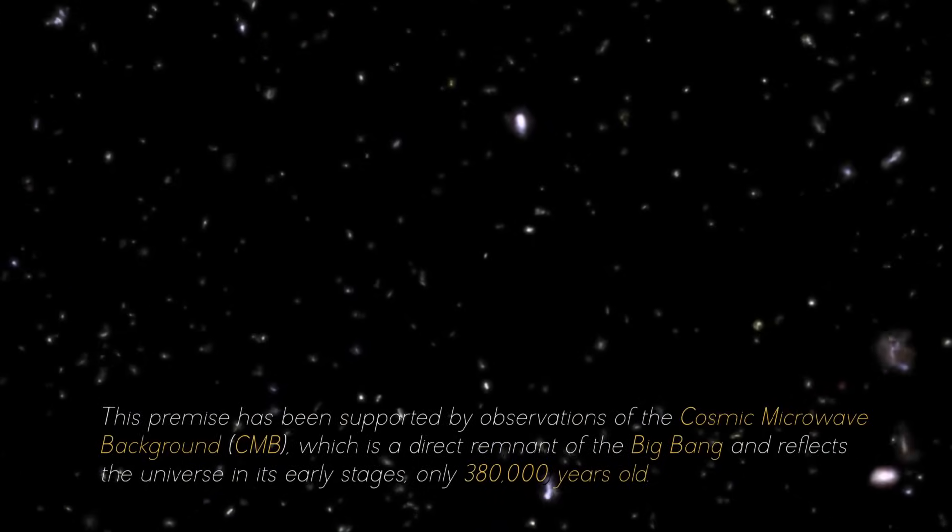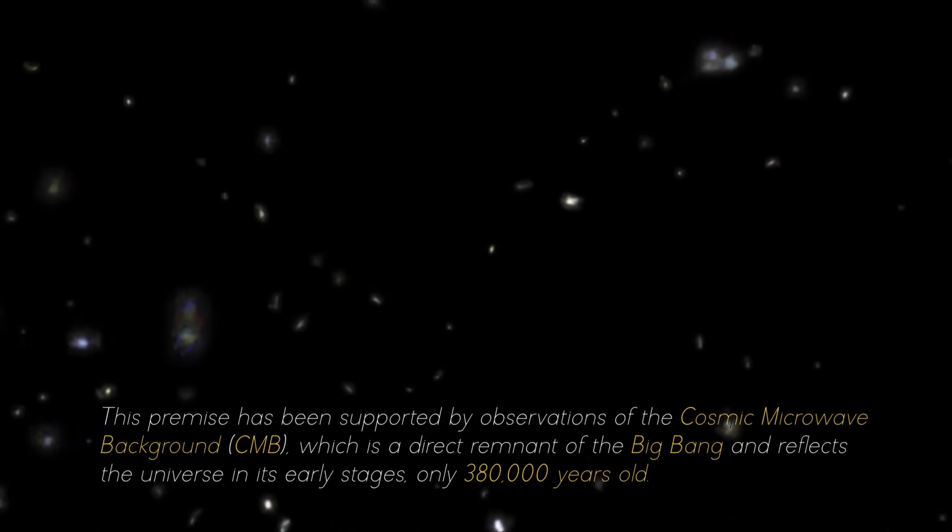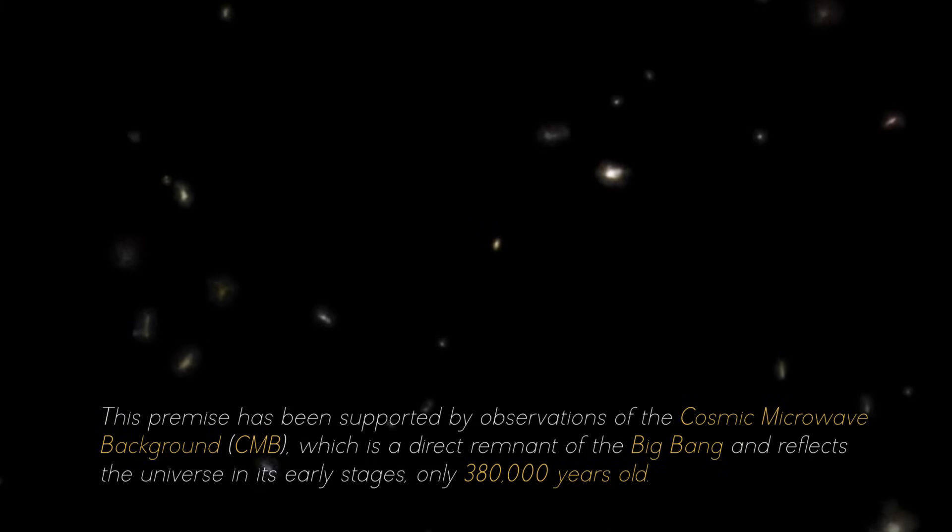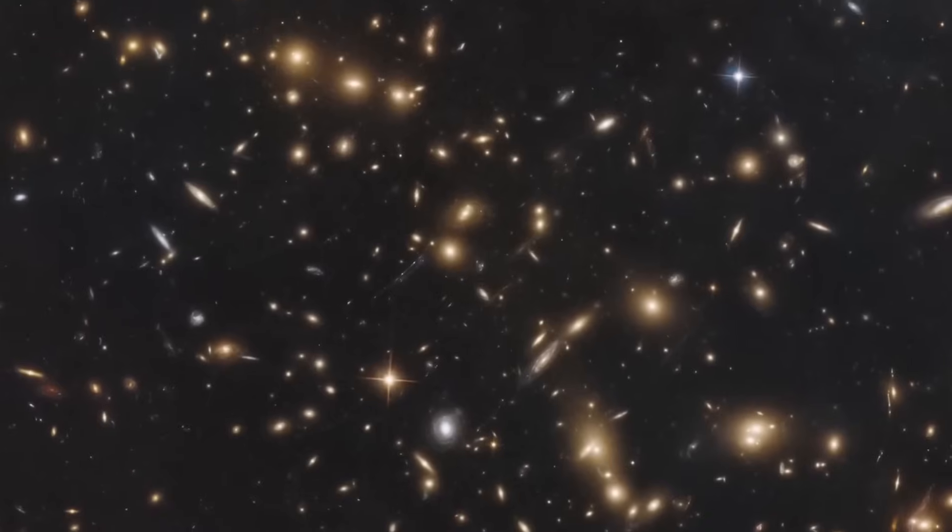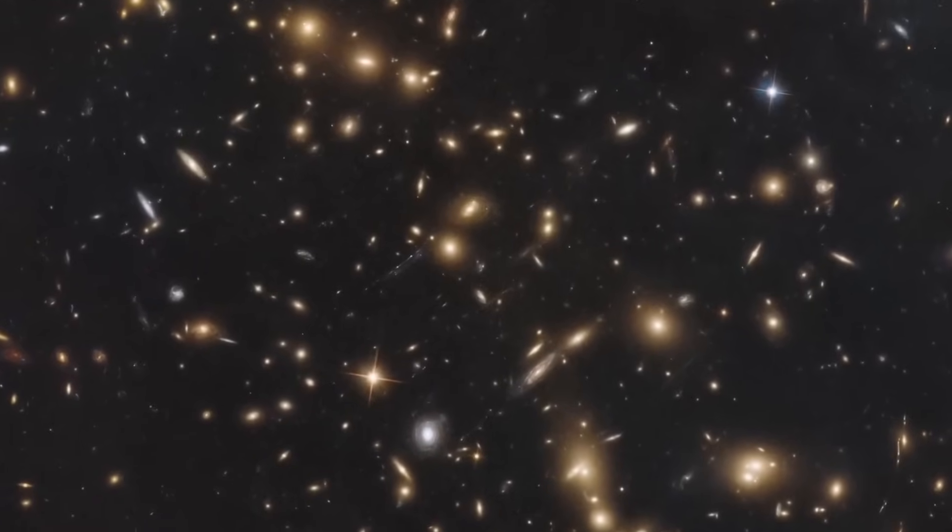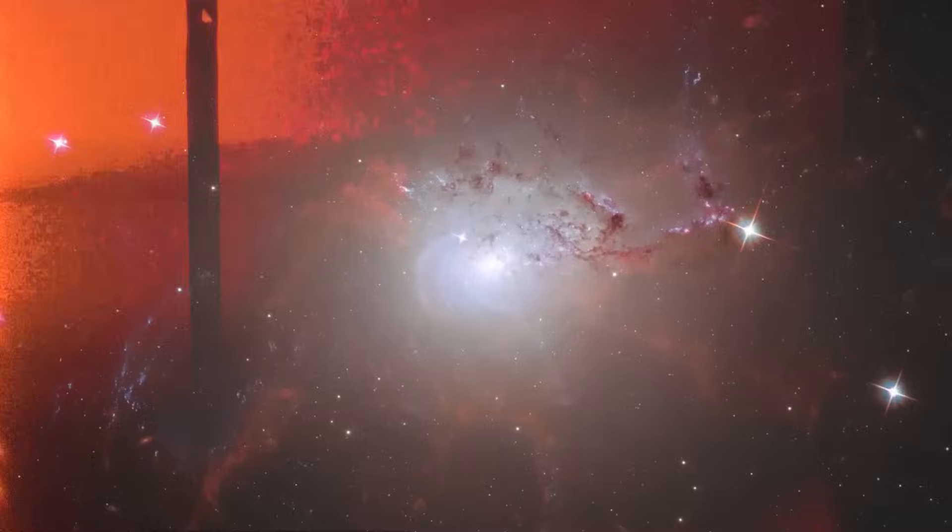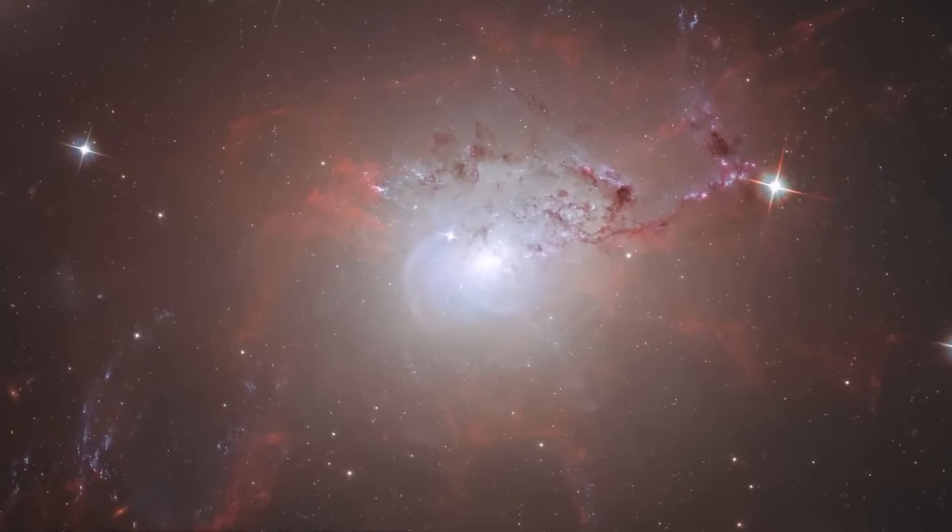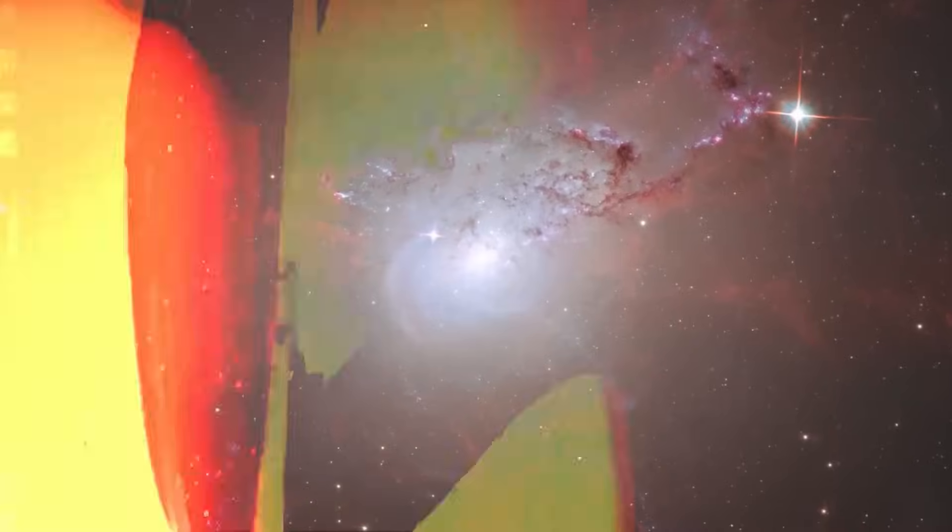This premise has been supported by observations of the Cosmic Microwave Background, or CMB, which is a direct remnant of the Big Bang and reflects the universe in its early stages. The uniform distribution of the CMB across the sky implies that the universe expanded rapidly and uniformly in all directions in those early times. However, in today's universe, this could not be true.